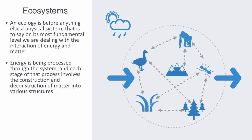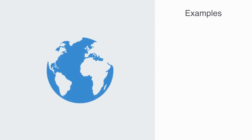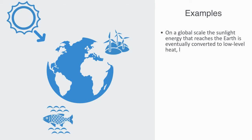That process takes place from some high potential energy source to some low potential energy sink. On an abiotic level, the ocean conveyor belt is driven by an energy gradient between the warm equator and the cold poles. The atmospheric winds are driven by an energy gradient between warm and cool geographical locations. On a global scale, the sunlight energy that reaches the Earth is eventually converted to low-level heat, leaving the Earth as radiation.